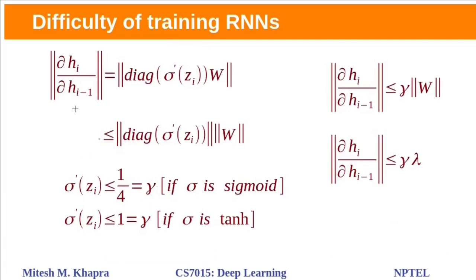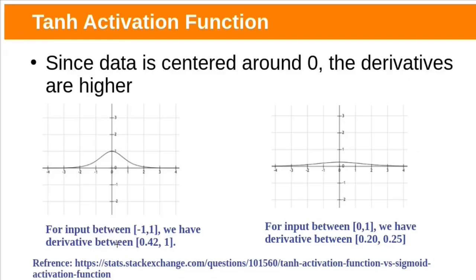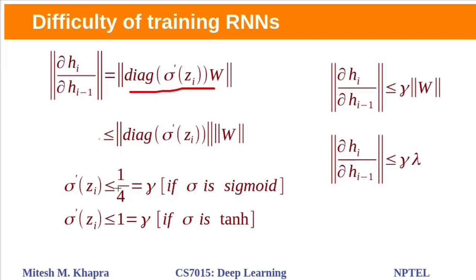The norm of this jacobian is bounded by the product of norms of these two matrices. Suppose if activation is sigmoid, its derivative value will be between 0.20 to 0.25. If activation is tanh, its derivative is between 0.42 to 1. Sigmoid upper bound is 0.25.